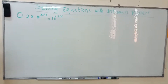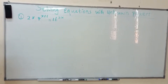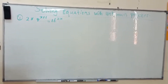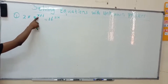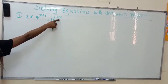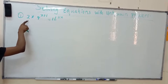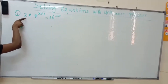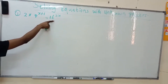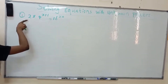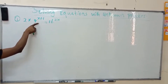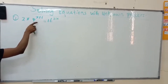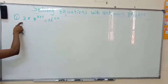We are solving equations with unknown powers. Looking at this equation, we have 2 and 16. The lowest base here is 2, so we have to make all terms have the same base.